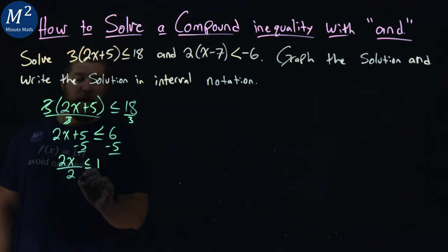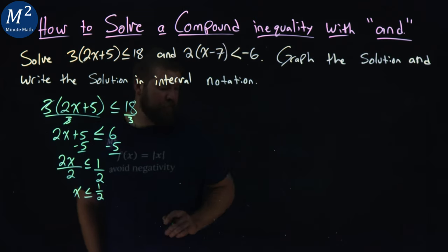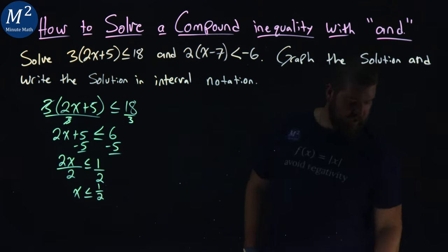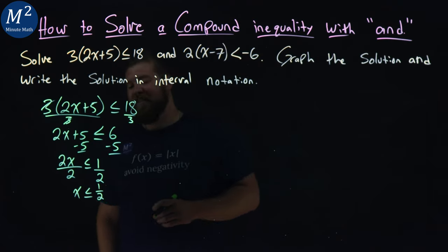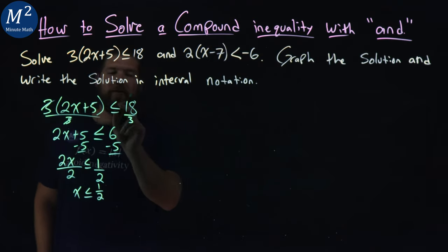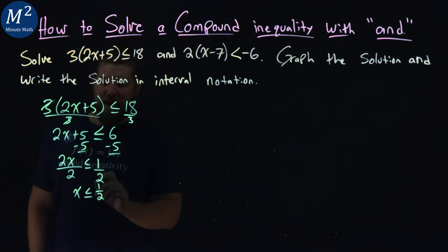Then we divide both sides by 2, and we're left with x is less than or equal to 1/2. Now I'm going to double check one thing. Okay, I'm good. I want to make sure I have the right answer there. The second one here, let's go simplify that.